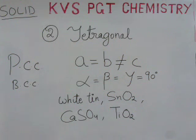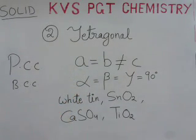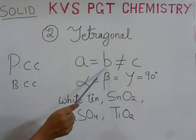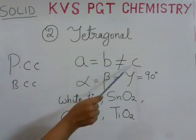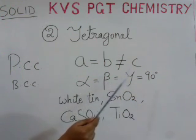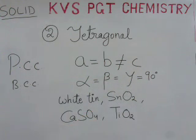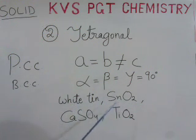The second type is tetragonal. In tetragonal, only two sides are equal: a = b, but not equal to c. All three sides are still perpendicular to each other, so alpha = beta = gamma = 90 degrees. Possible variations are primitive and body-centered cells. Examples include white tin, SrO₂, calcium sulfate, and titanium oxide.